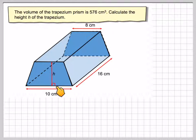So we have given a trapezium prism. This is a trapezium. This side is parallel to this side, and I have to calculate the height here.